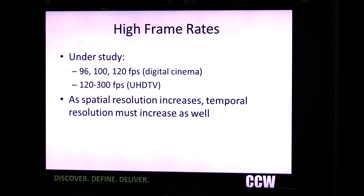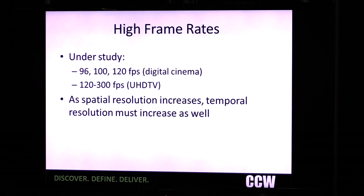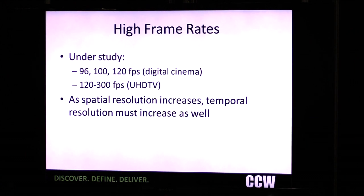High frame rates are under study for digital cinema — we're looking at 96, 100, and 120 frames per second. For UHD TV, we're looking at 120 to 300 frames per second. The key thing here is that as spatial resolution increases, temporal resolution must increase as well.